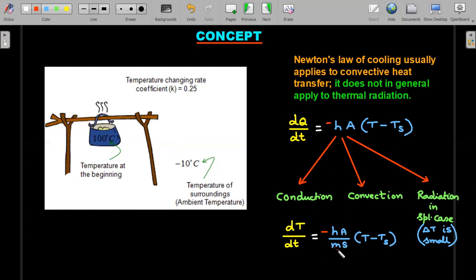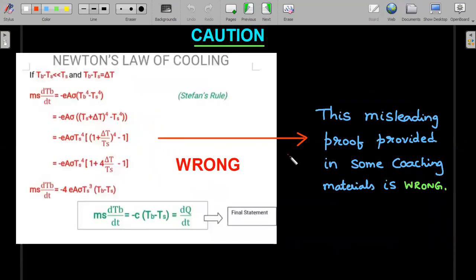But the misleading part is some students think that this h will contain the emissivity. Yes, it does contain if you take radiation also, but it is a sum of the three forms, in which you can't say it is proportional to e. Some coaching centers' manuals or materials contain this particular proof, which is a misleading one. I'm not saying it is completely wrong, but if you consider convection, then this is definitely not correct.